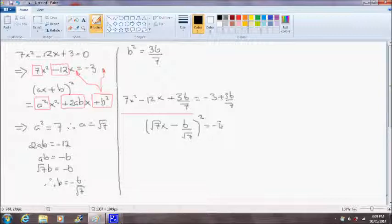And that's equal to, I'm just going to follow this through, minus 3 plus 36 on 7. That actually becomes a 21 when we put a common denominator through. And that will result in 15 on 7.